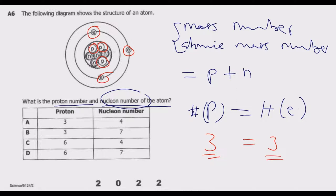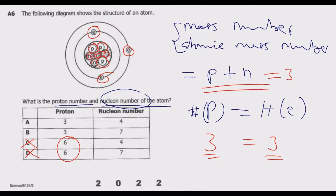Looking at the options, we have 3 protons, so options C and D are out because they show 6, which is incorrect. We remain with options A and B. For the nucleon number — the total number of protons and neutrons — we have 3 protons and 4 neutrons (1, 2, 3, 4). Adding these gives 7. So 7 is the correct nucleon number, and option B is the correct answer.